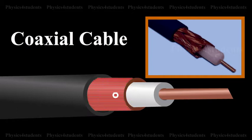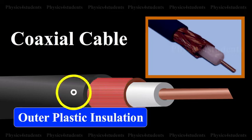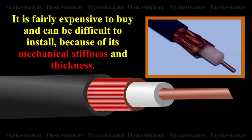a tubular braid or shield made of fine wires. An outer plastic insulation protects and insulates the braid. It is fairly expensive to buy and can be difficult to install because of its mechanical stiffness and thickness.